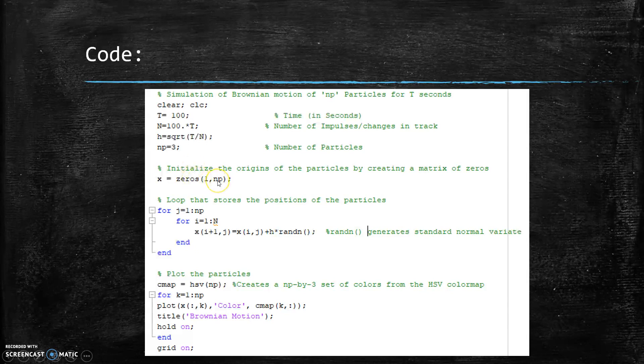And so right here we're initializing the origin of the particles by creating a matrix of zeros. And then we begin our loop that stores the positions of the particles. And right here, as you can see, this is where we're randomly generating our values.